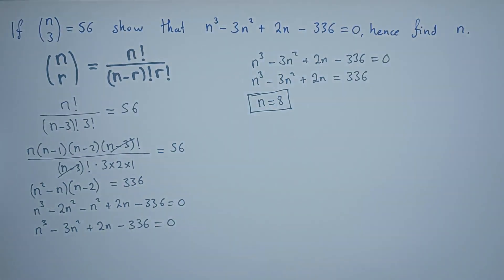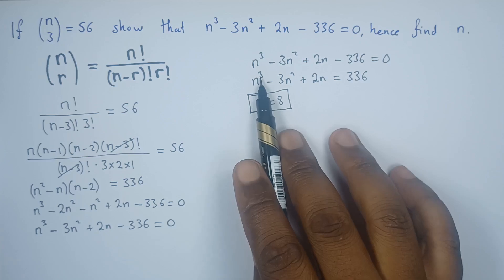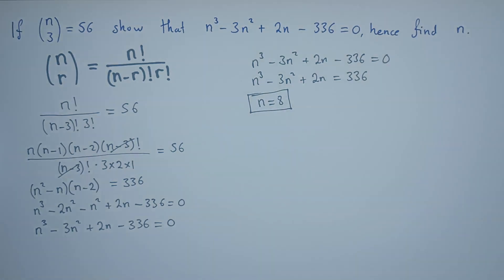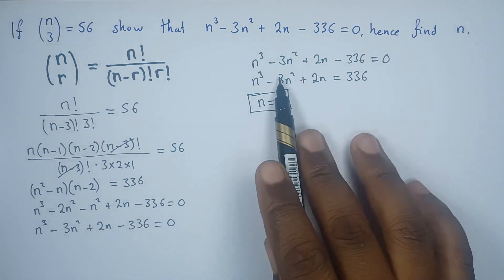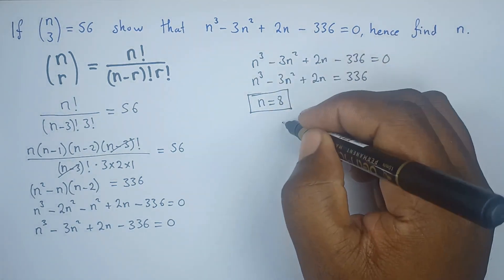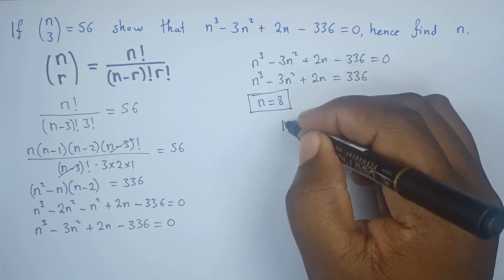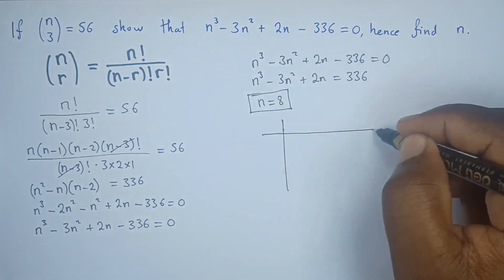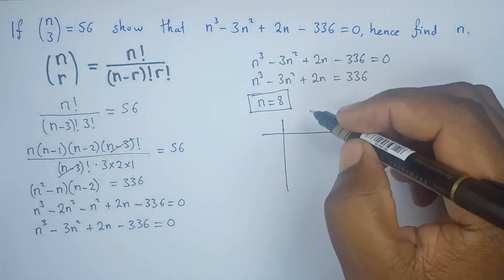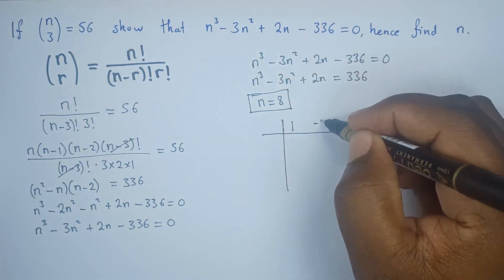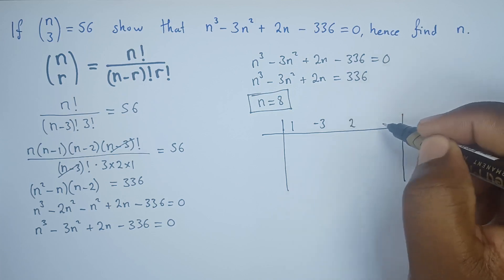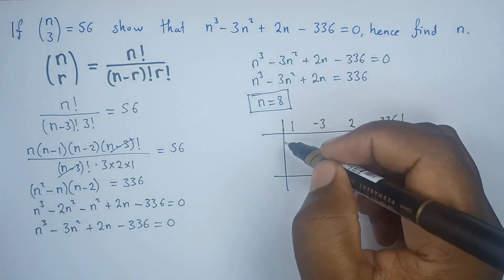To find the other solutions, because remember the degree of the polynomial is 3, we'll go into synthetic division. The coefficients are 1, -3, 2, -336. Remember, we have 8 that we already found as the first factor.